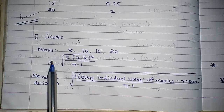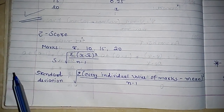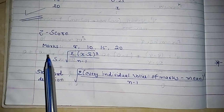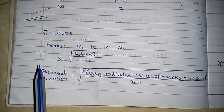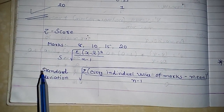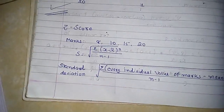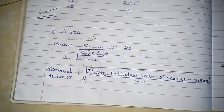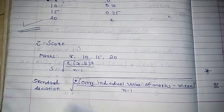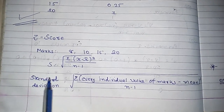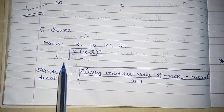In the previous video we were discussing about min-max normalization. In this video we will discuss about z-score normalization and decimal scaling. Z-score normalization has two formulas.